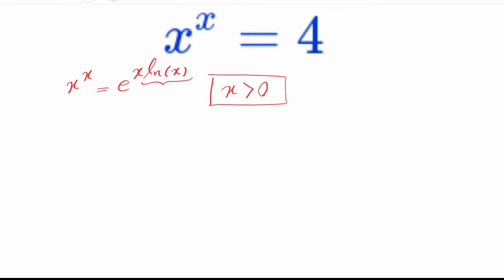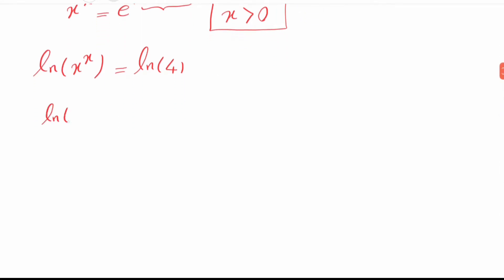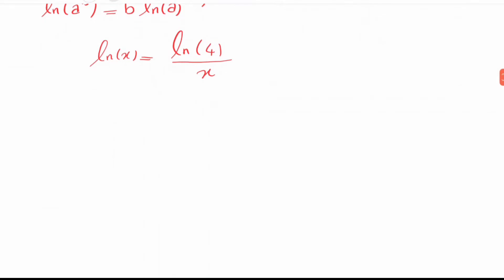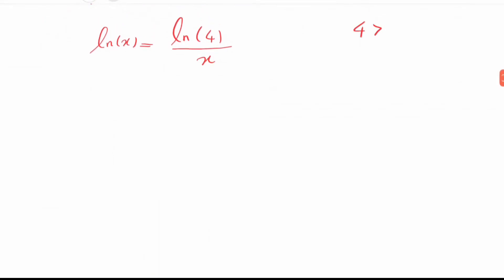Now if we take ln from both sides of the equation, we get that ln of x to the x equals ln of 4. Since ln of a to the b equals b times ln of a, we get that x times ln of x equals ln of 4. Since 4 is greater than 1, ln of 4 is a positive number.